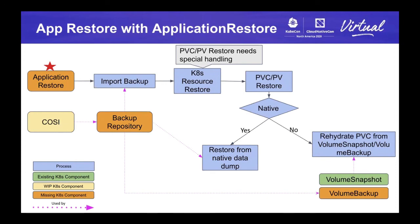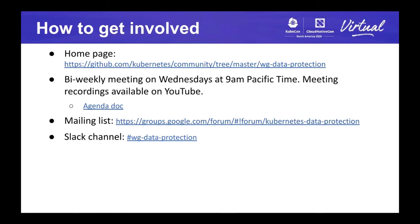Next, I'm going to talk about how to get involved. This working group is working on identifying missing functionalities to support data protection in Kubernetes and trying to figure out how to fill those gaps. We have bi-weekly meetings on Wednesdays at 9 a.m. Pacific time. If you are interested in joining the discussions, you are welcome to join our meetings. We also have a mailing list and a Slack channel. This is the end of the presentation. Thank you all for attending. If you have any questions, please don't hesitate to reach out to us.